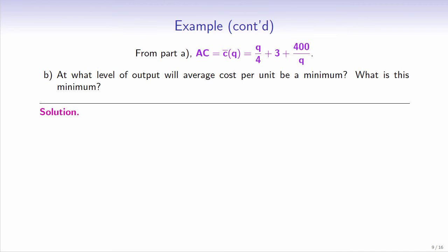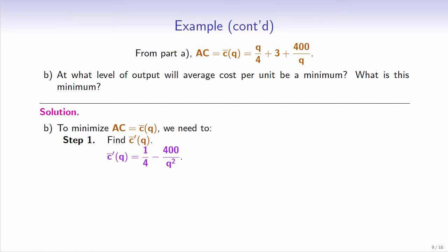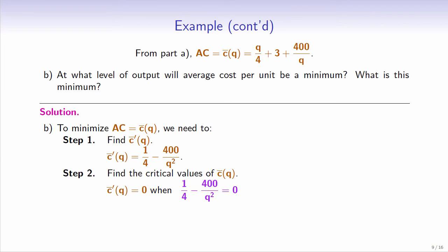For Part B, in order to minimize average cost, we need to follow 4 steps. Step 1: find the first derivative. The first derivative of average cost is equal to 1 over 4 minus 400 over q squared. Step 2: find the critical values of average cost. The first derivative equals zero when 1 over 4 minus 400 over q squared equals 0.